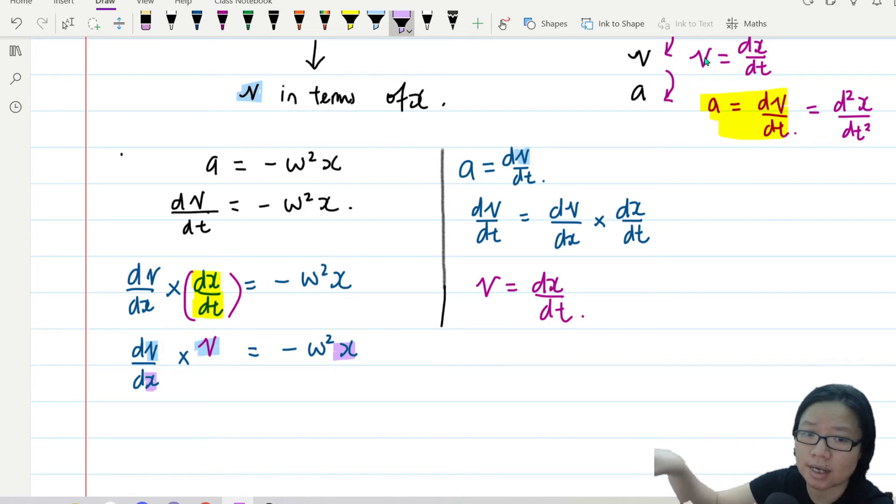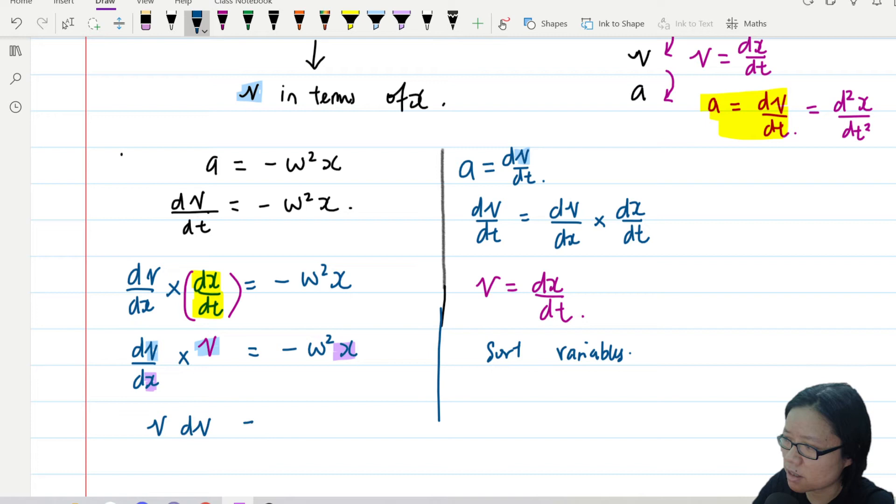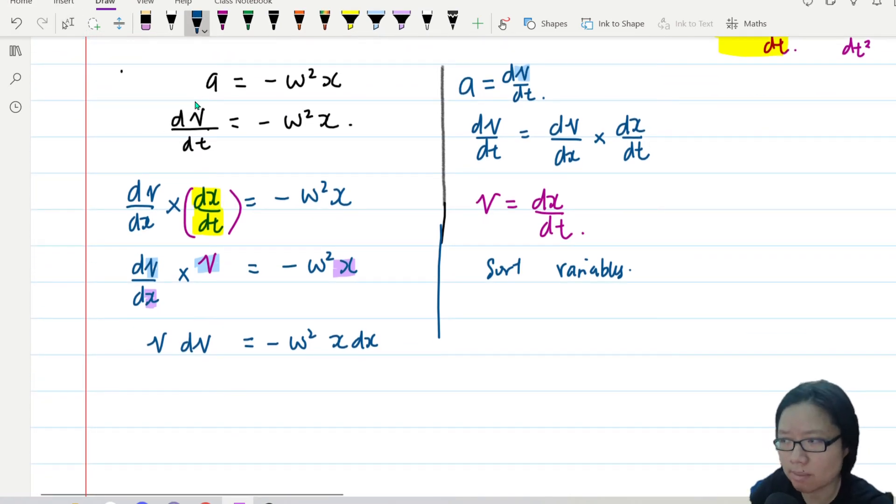We need to gather all the v on one side and all the x on the other side—we need to split them up to solve the first order differential equation. Before you integrate, you have to compile and sort the variables. I'm going to sort variables now. Here I will have v dv = -ω²x dx. Your variables are now sorted. Once sorted, you integrate.